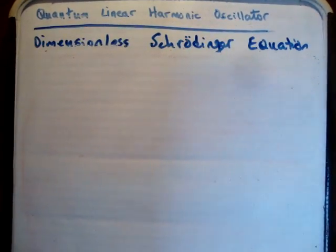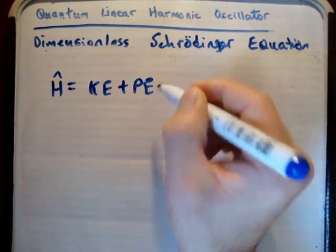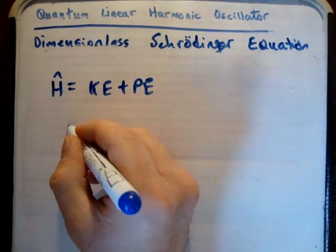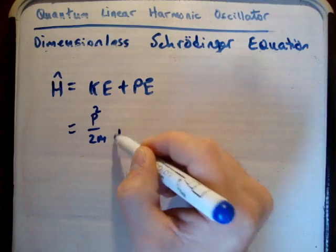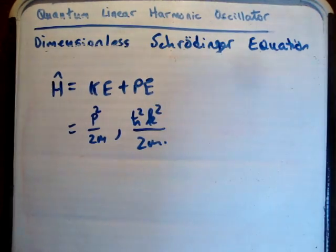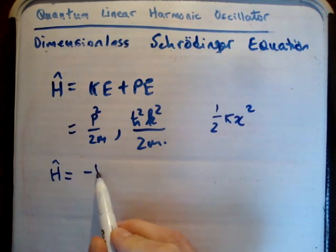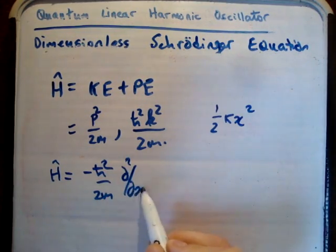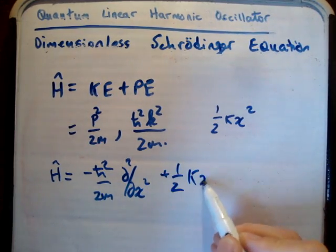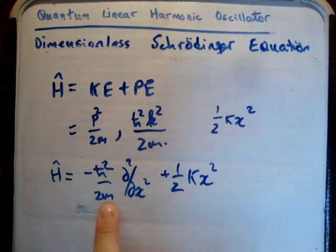Let's look at our Hamiltonian operator. The Hamiltonian gives you the energy in your system, and it's usually your kinetic energy plus your potential energy. We know that kinetic energy is p squared over 2m. The potential energy in our harmonic oscillator is one-half k times x squared. That means we can write our Hamiltonian operator as minus h-bar squared over 2m, del-squared over del-x-squared, plus one-half k x squared. This will give us the energy in our linear harmonic oscillator system.